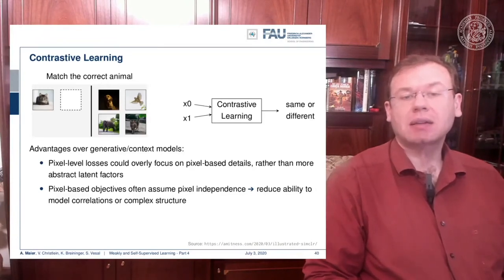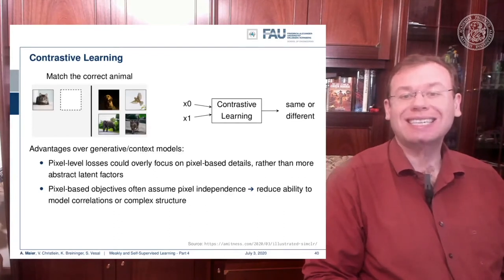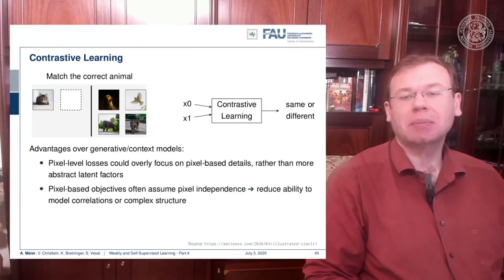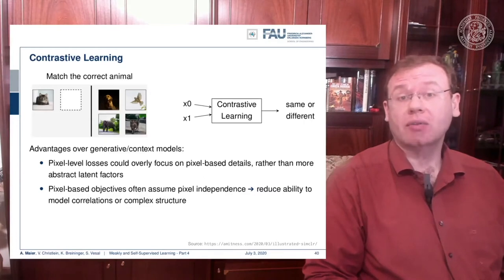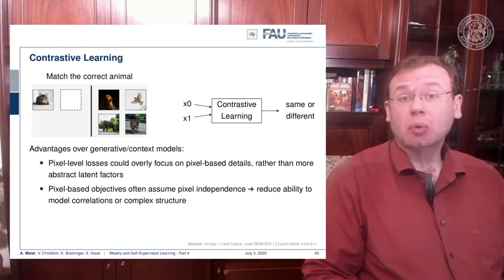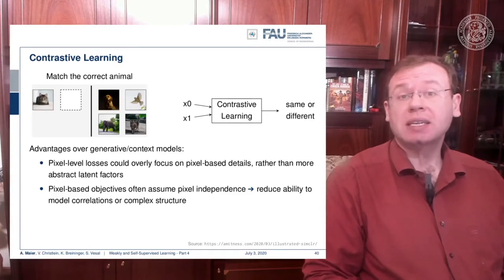For example, pixel-level losses could overly focus on pixel-based details, and pixel-based objectives often assume pixel independence, which reduces the ability to model correlations or complex structures. Here we can build abstract models that are also built in a hierarchical way. This supervised example also works with many of the different pseudo-labels we've seen earlier.